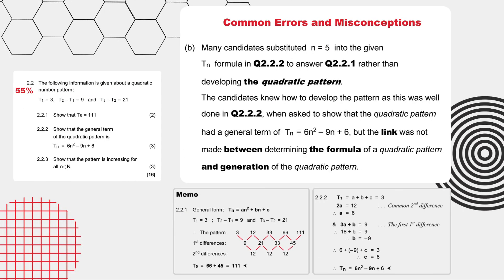If we look at the common errors and misconceptions for these two sub-questions, many candidates substituted n equals 5 into the given TN formula in question 2.2.2 to answer question 2.2.1 rather than developing the quadratic pattern. The candidates knew how to develop the pattern, as this was well done in question 2.2.2 when asked to show the quadratic pattern, but the link was not made between determining the formula of a quadratic pattern and generation of the quadratic pattern.